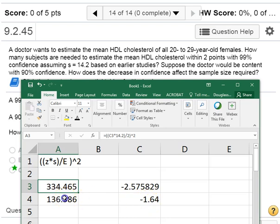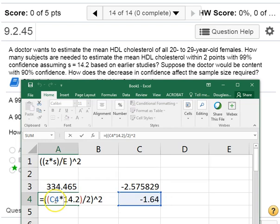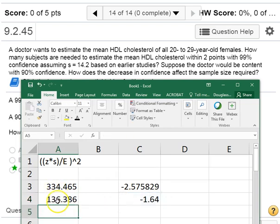And as you can see, when you plug in that new lower critical value here, we get a smaller sample size back that we need to reach our lower level of confidence. And in this case, our sample size would, again, round up, so it's 137.